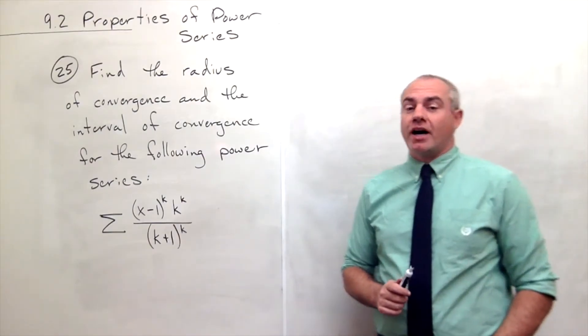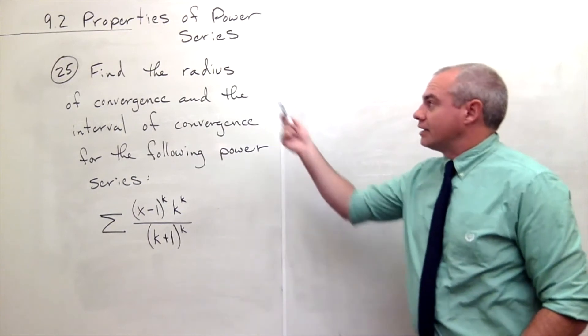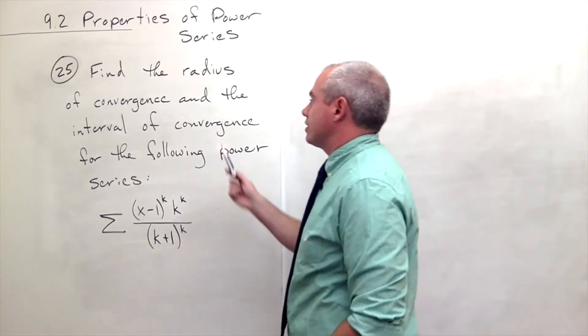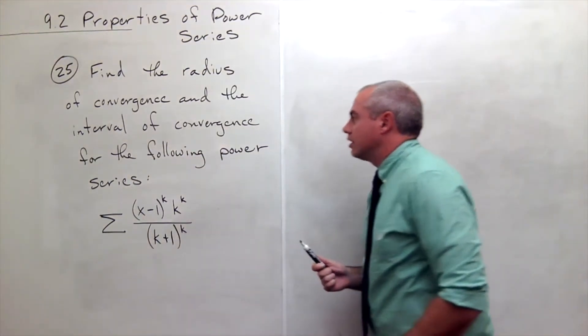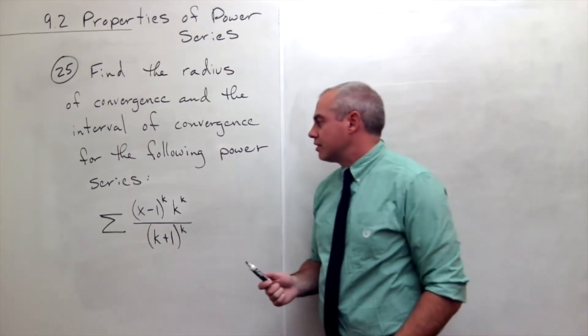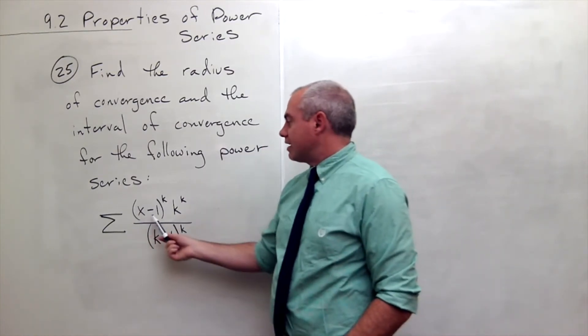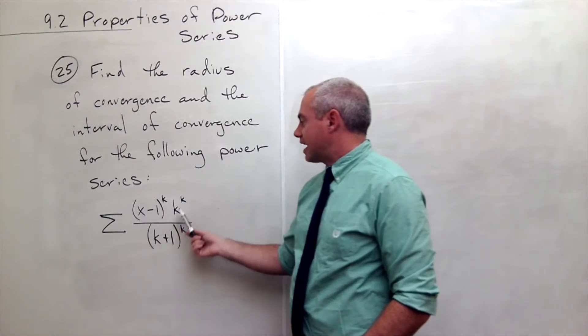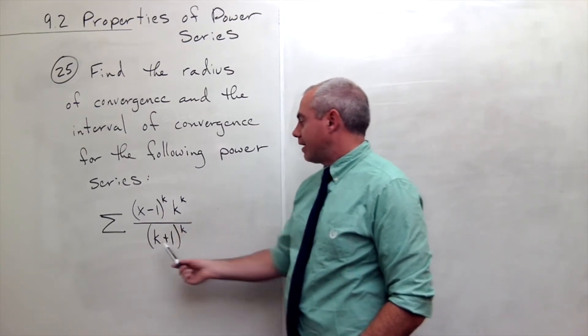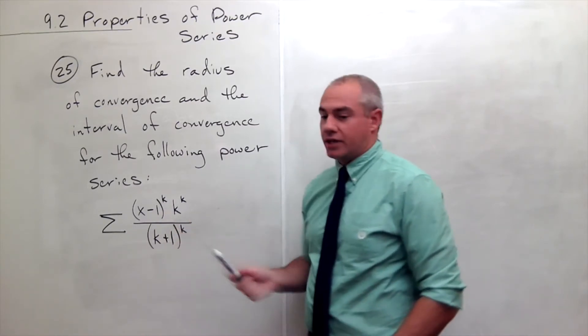I'm the calculus professor and today I'll be talking to you about properties of power series. In problem number 25, I'd like to find the radius of convergence and the interval of convergence for the following power series. We have the sum of k minus 1 to the k times k to the k divided by k plus 1 to the k.